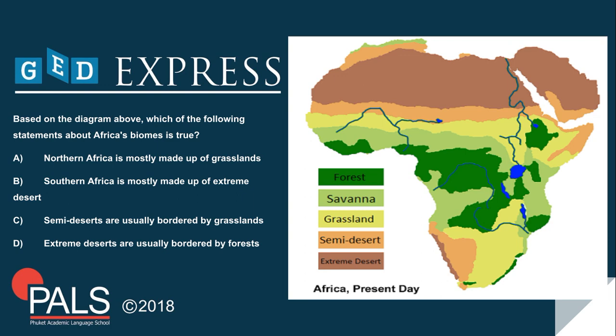The second thing you need to know is how to read keys. This will come in handy when analyzing diagrams in the GED science test. Let's take a look at the image and the question: based on the diagram above, which of the following statements about Africa's biomes is true? A: North Africa is mostly made up of grasslands. B: Southern Africa is mostly made up of extreme deserts. C: Semi-deserts are usually bordered by grasslands. D: Extreme deserts are usually bordered by forests. The correct answer is C — semi-deserts are usually bordered by grasslands.